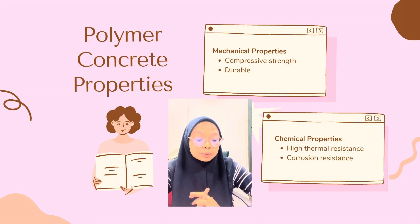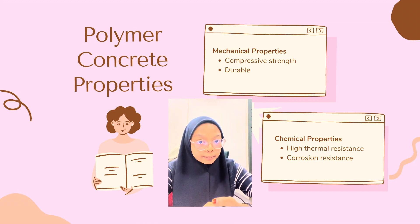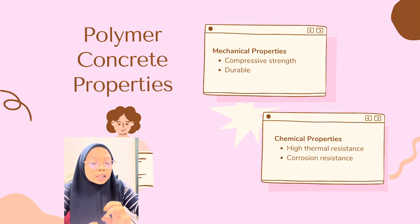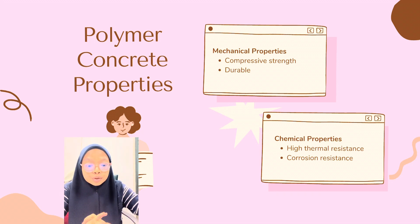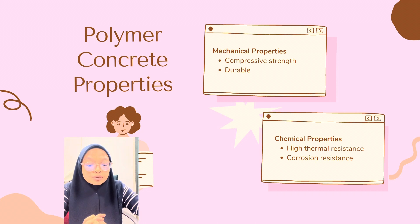As for mechanical properties, the compressive strength of polymer concrete is either similar to or greater than Portland cement. Polymer concrete is durable due to its very low water permeability and low absorptive solution. As for chemical properties, it is high in thermal reaction, so it is durable under conditions of rapid temperature rise and freeze-thaw cycles. Polymer concrete is also resistant to chemical attack.